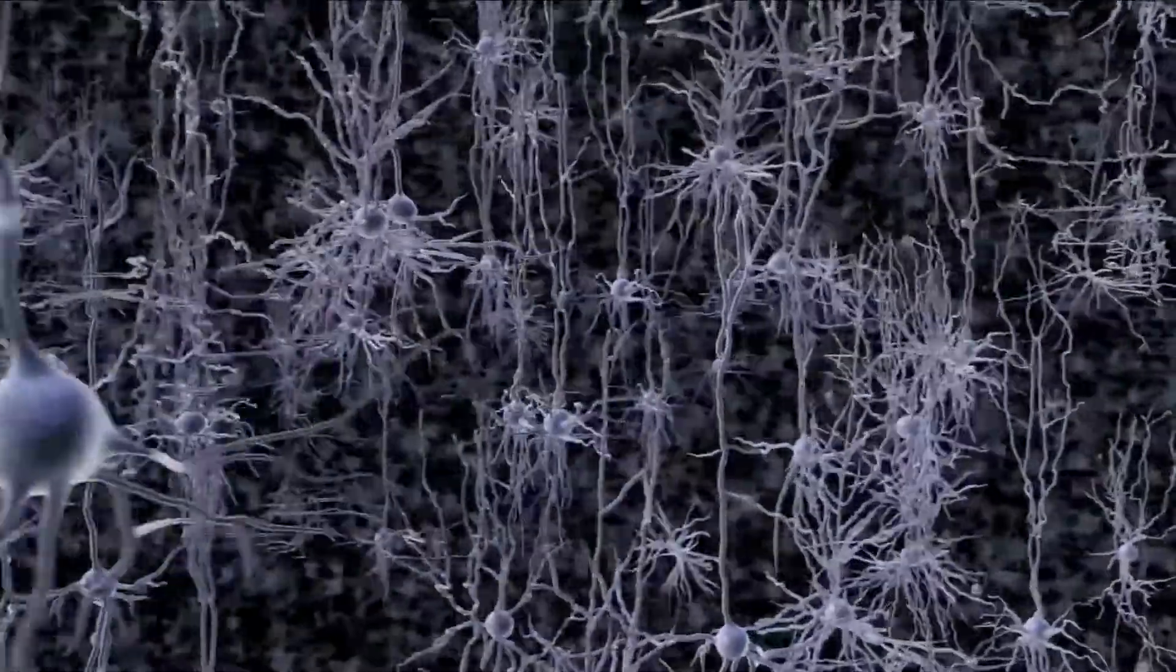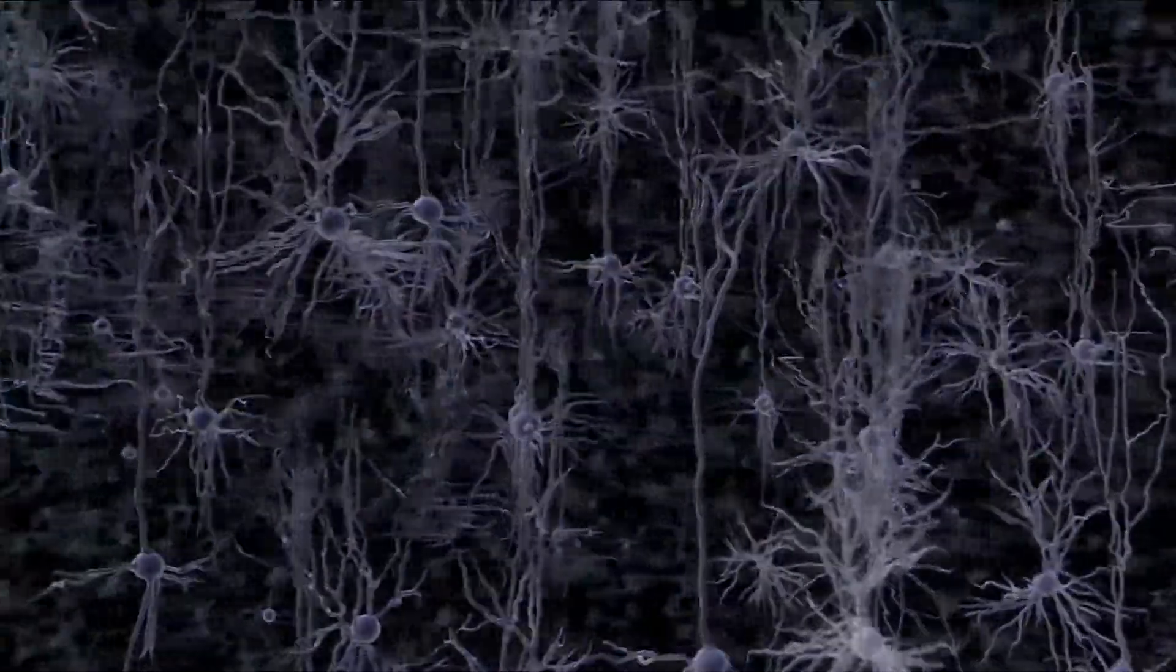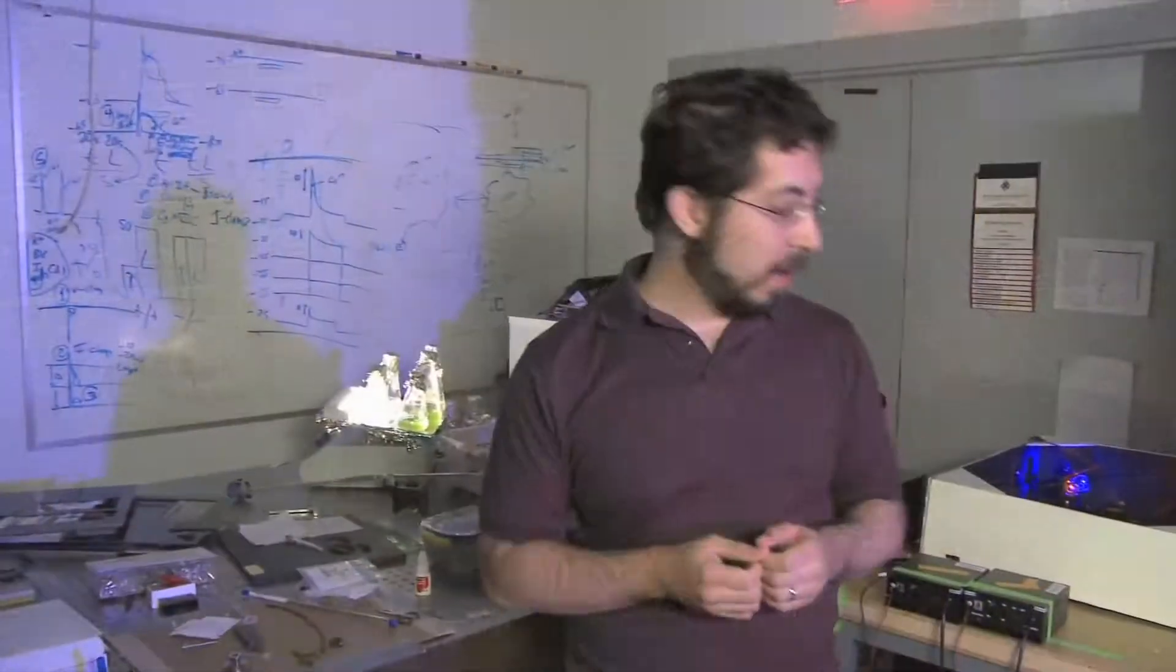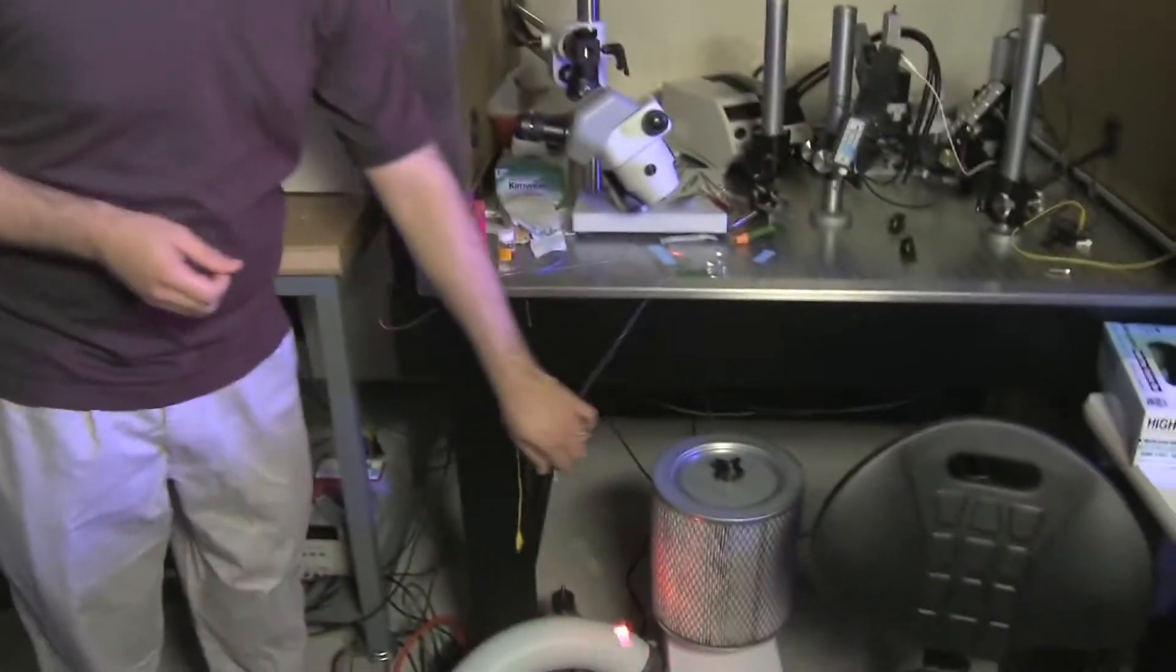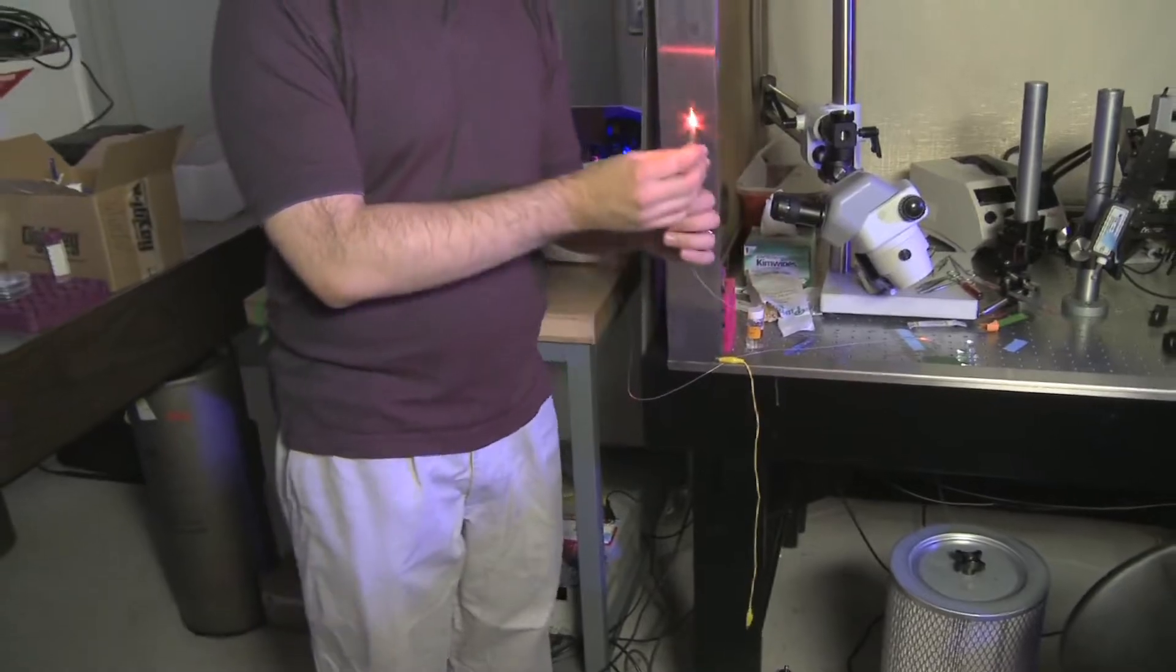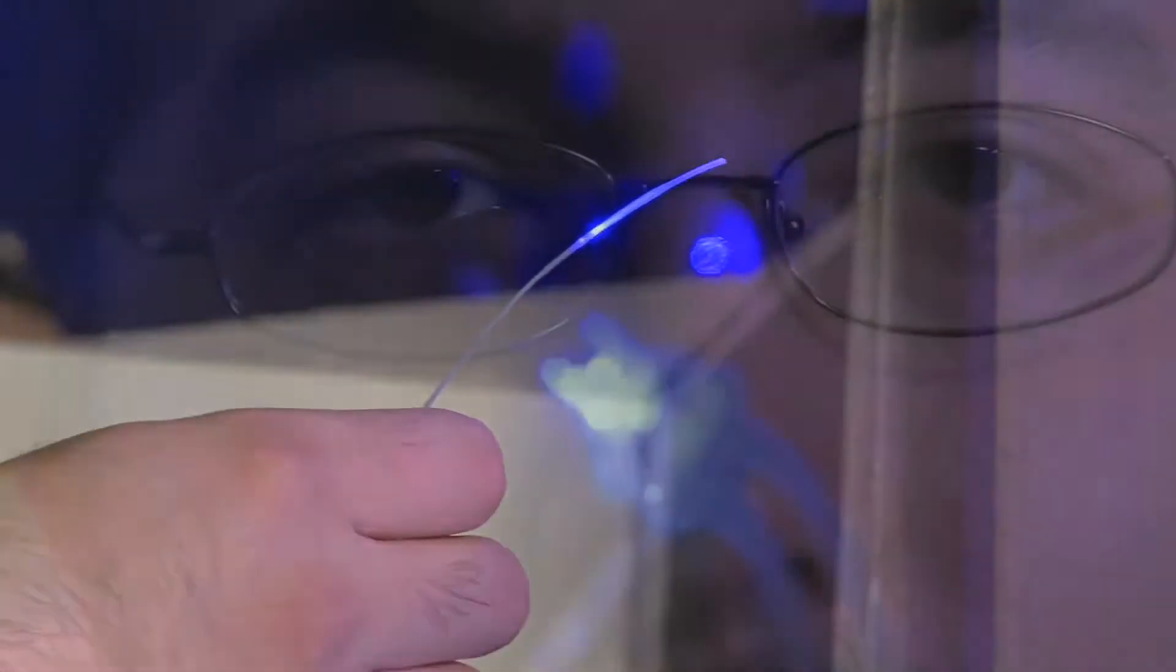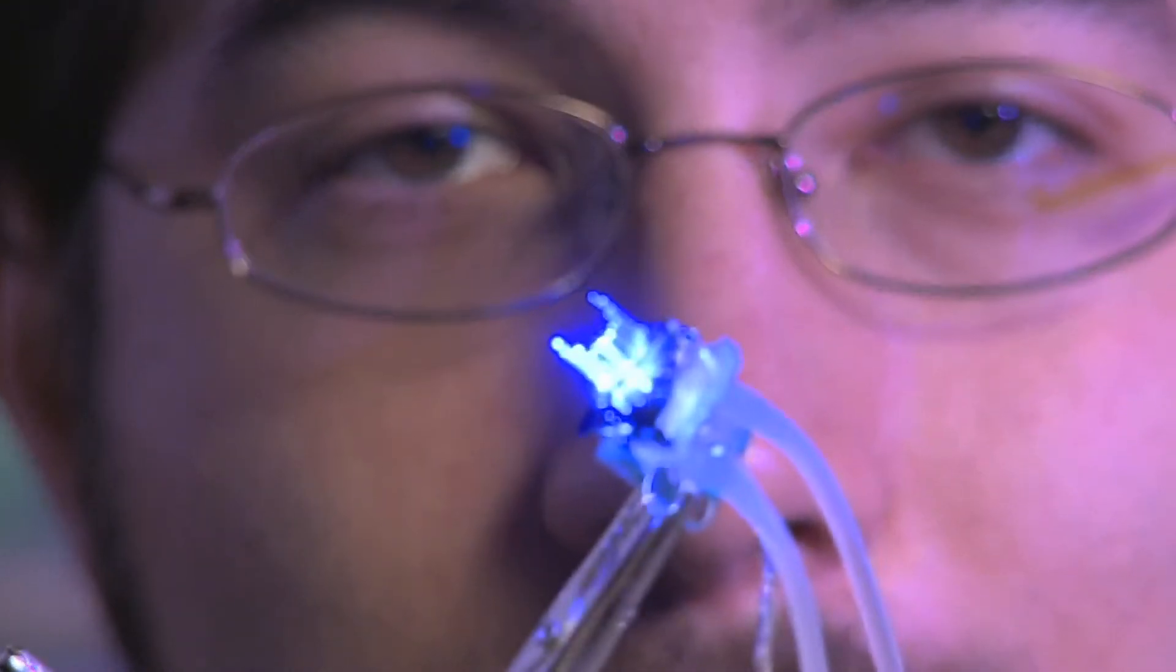Now MIT researchers are working to develop tools that allow us to do exactly that. It is now possible to precisely control the activity of specific neurons and therefore understand how each neuron contributes to brain function.